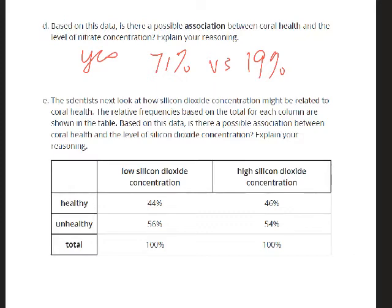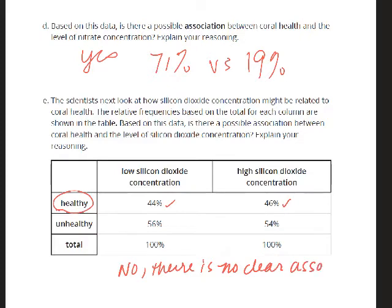The next question asks us to explain our reasoning: based on this data, is there a possible association between coral health and the level of silicon dioxide concentration? I'm going to look at the healthy coral row. One percentage is 44% and the other is 46% — those percentages are really close together. So the answer is no; there is no clear association about the impact of low or high silicon dioxide for healthy coral.